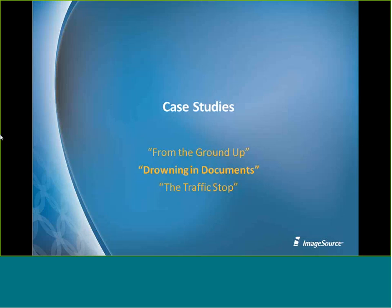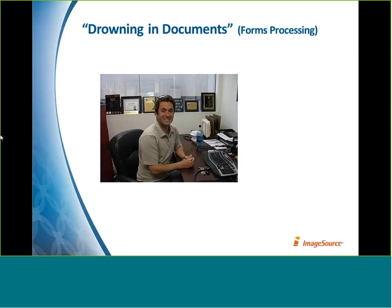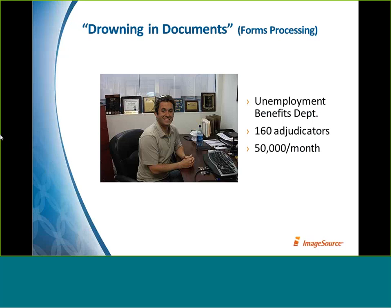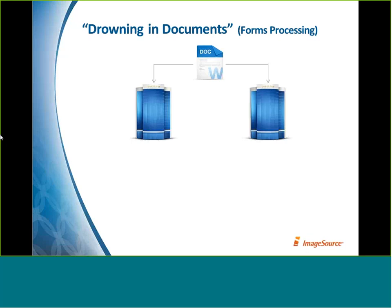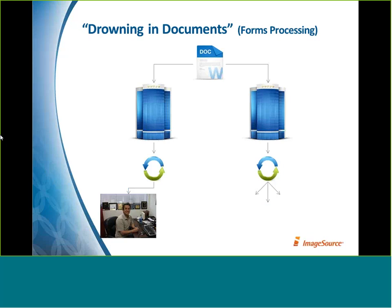On to our next case surrounding forms processing, which we've titled 'Drowning in Documents.' This is Greg. Greg is one of 160 adjudicators working in the Unemployment Benefits Office for his entire state. His job is both extremely important and extremely time consuming. Between the 160 adjudicators, his department handles more than 50,000 unemployment benefits applications each month, and unfortunately in recent years that number had been growing. The applications are sorted and routed to adjudicators based on the last four digits of the applicant's social security number, with exceptions made for language barriers and other details. This process of document sorting and routing is entirely manual.